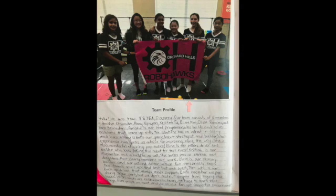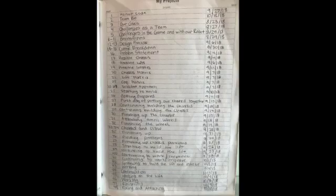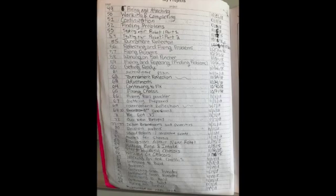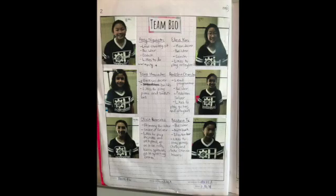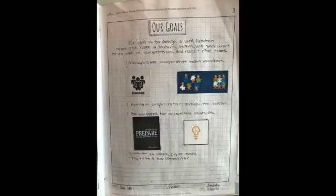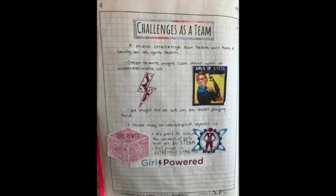Their notebook starts with a team profile description with a picture, and then the table of contents, which is documenting their progress on almost a daily basis. There's also an honor code that the coach created for Orchard Hills and a team bio with a little bit of information about each team member. They also started with their overall arching goals and challenges they think they're going to face as a team, including being an all-girls team and how they might overcome those challenges.